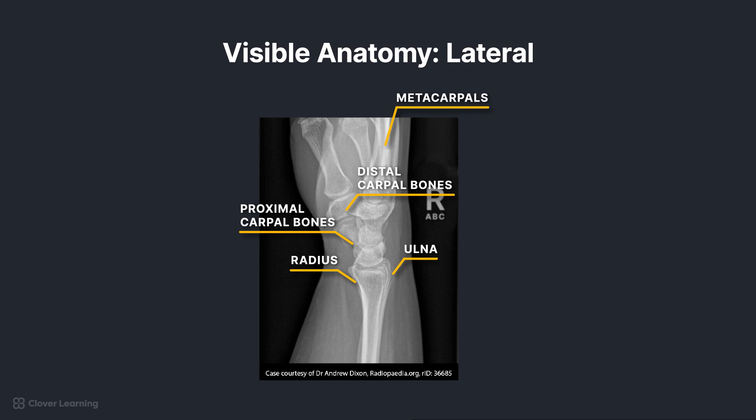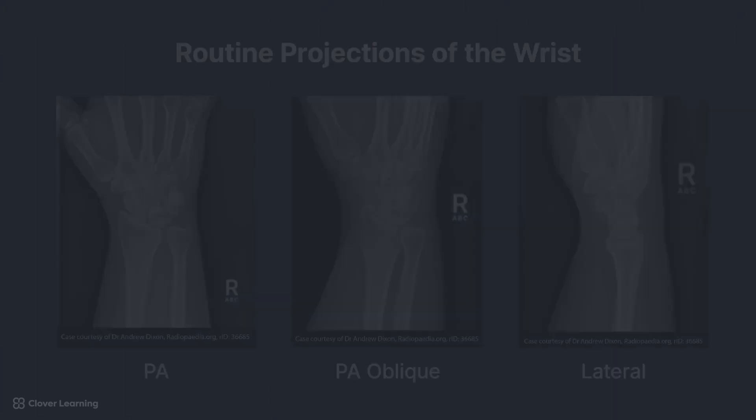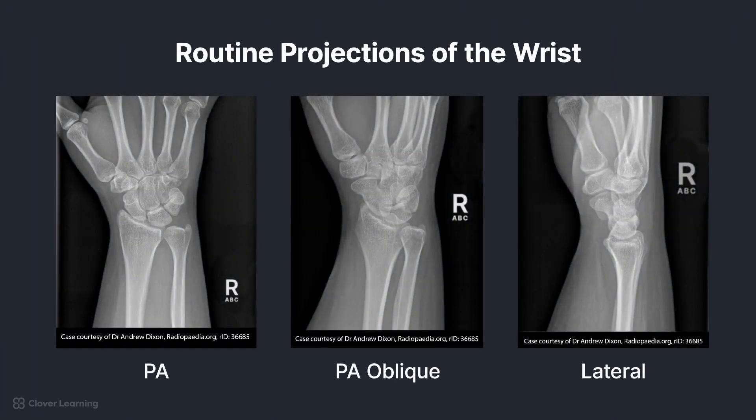Were you able to correctly identify the anatomy in these images? In summary, the routine radiographic projections for the wrist include PA, PA oblique, and lateral. Obtaining clear, diagnostic-quality images of the wrist can help identify fractures and other pathological conditions. Identifying and recognizing the relevant anatomy is the first step in ensuring the evaluation criteria are met.